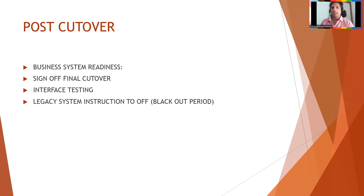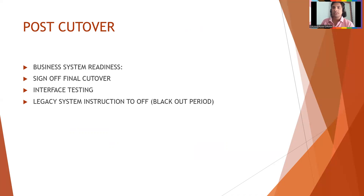Post-cutover also involves cutover run and business system readiness. With a dummy customer or dummy data, can we create a sales order or run whatever processes we've tested so far? All objects moved or not — they will do config testing, called smoke testing, to verify the system is ready for go-live the next day.